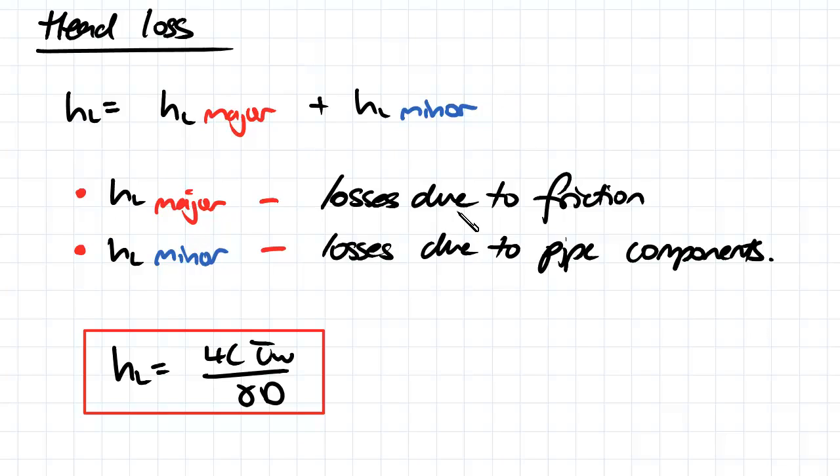Therefore, our head losses in the major component are going to be greater for turbulent flow where we have greater viscous effects compared to laminar flow where we'll have smaller head losses in the major component.